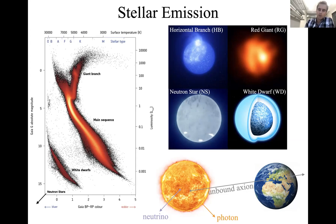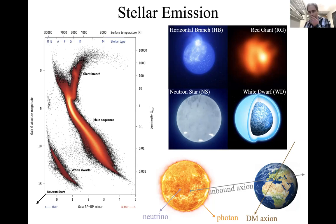Given that stars can cool via neutrinos, they can also cool via axions or other weakly coupled particles, and that sets pretty strong constraints. The absence of anomalous cooling of red giants, horizontal branch stars, neutron stars, and white dwarfs gives pretty good constraints on all the couplings of axions — generally stronger than cooling constraints from the sun. Despite that, we can try to detect axions produced in the sun with detectors in Italy.